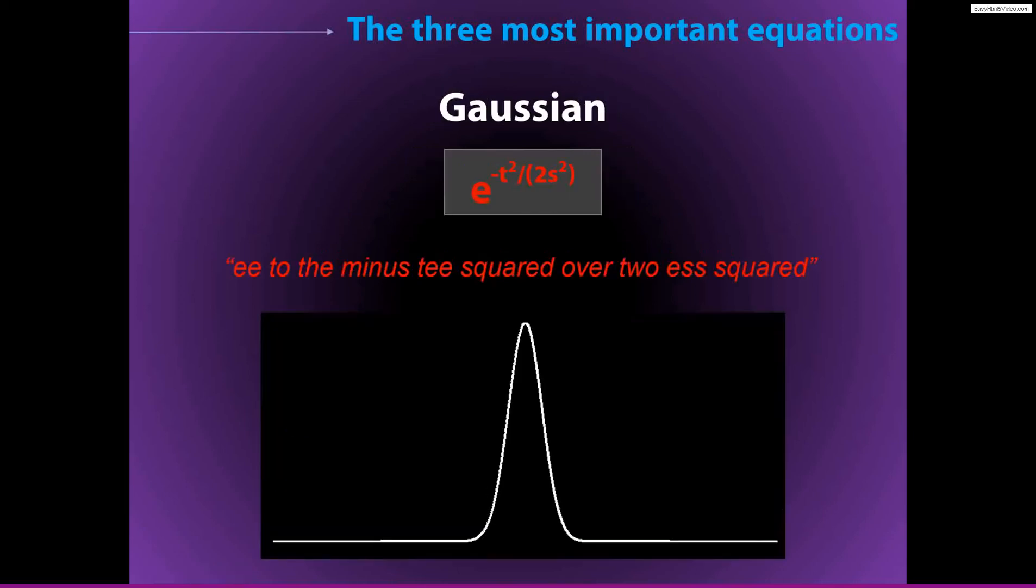The second important equation is the Gaussian, and I'm sure you are also familiar with the Gaussian. It looks something like this. It's also called a bell curve or a normal curve or a normal distribution.